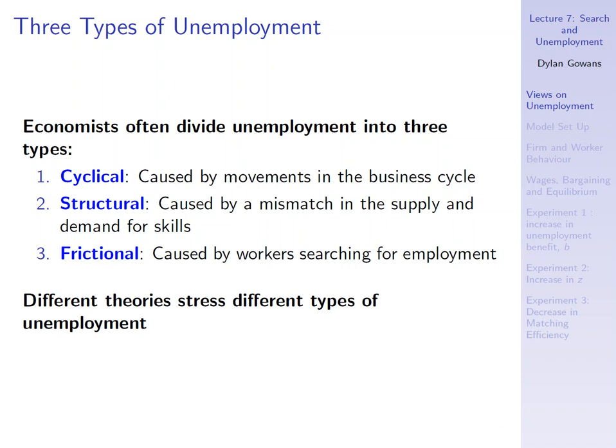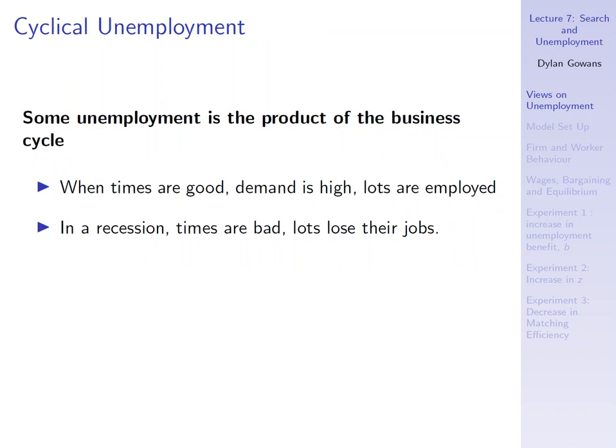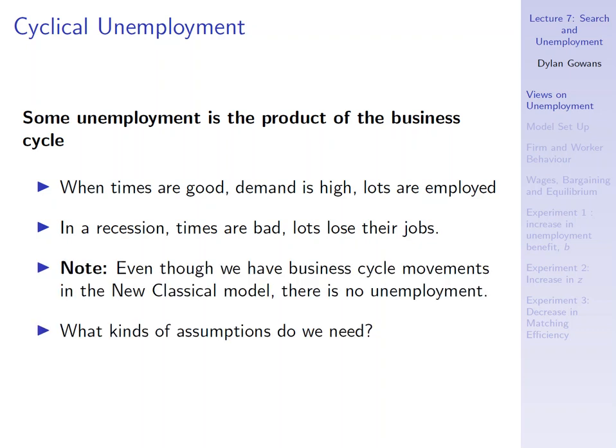Cyclical unemployment: when times are good, demand is high and lots of people are employed, but in a recession many people lose their jobs. Note that in our new classical model we did have business cycle movements but still no unemployment, because the wage was always adjusting to bring us back to a situation where labor supply equals labor demand.